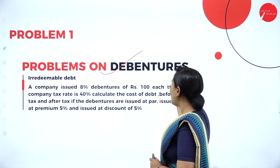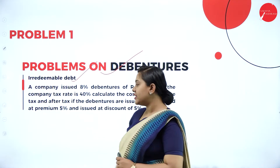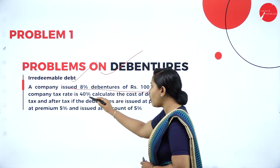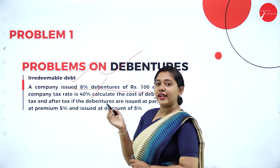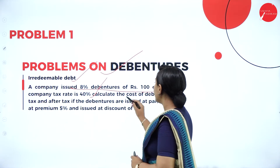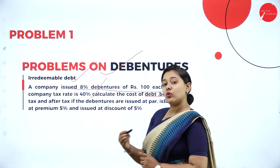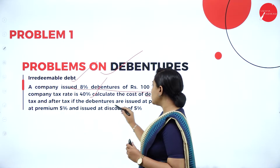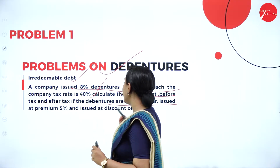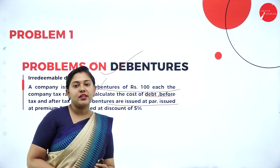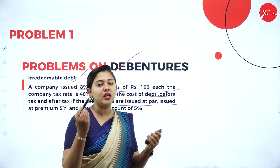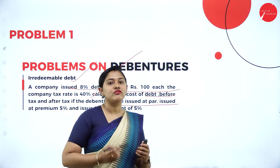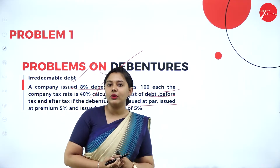Problem number one is a problem on debentures — irredeemable debt. A company issued 8% debentures of Rs. 100 each. The company tax rate is 40%. Calculate the cost of debt before tax and after tax. The debentures are issued under three conditions: issued at par, issued at a 5% premium, and issued at a 5% discount — each requiring before tax and after tax calculations. The formula remains the same; only the net proceeds change.